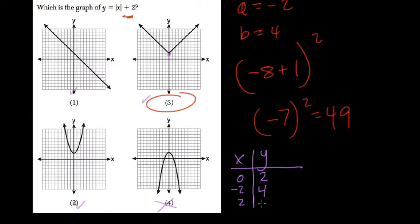Plug in 2, and we should get 4 as well. So here, graph 1 does not have that value. Graph 2 does, so we need to test more values.